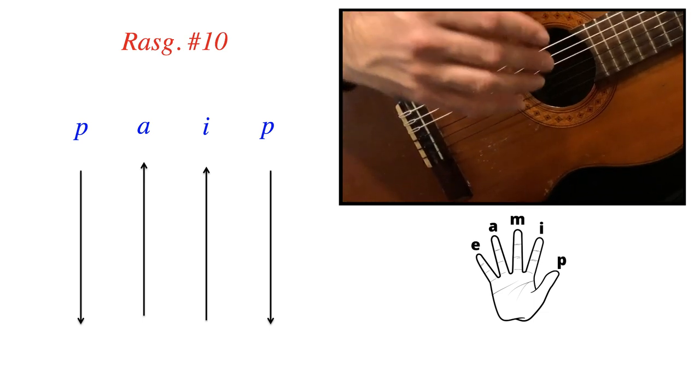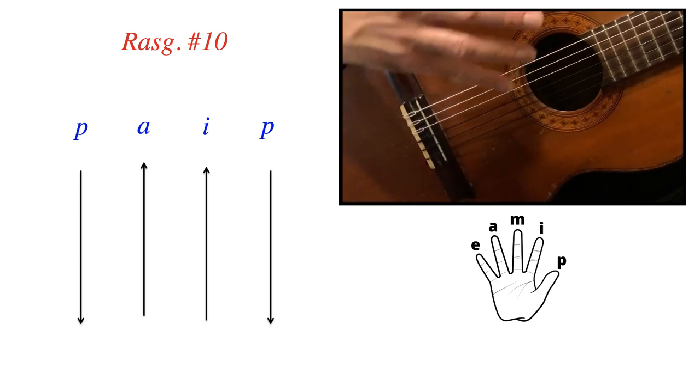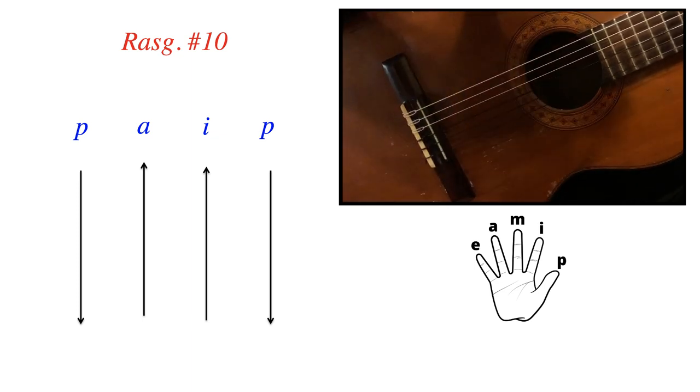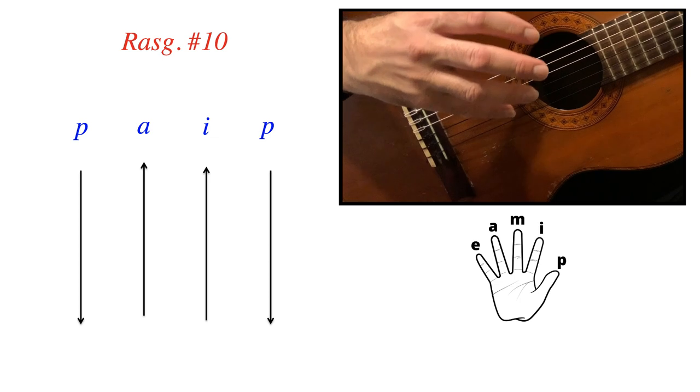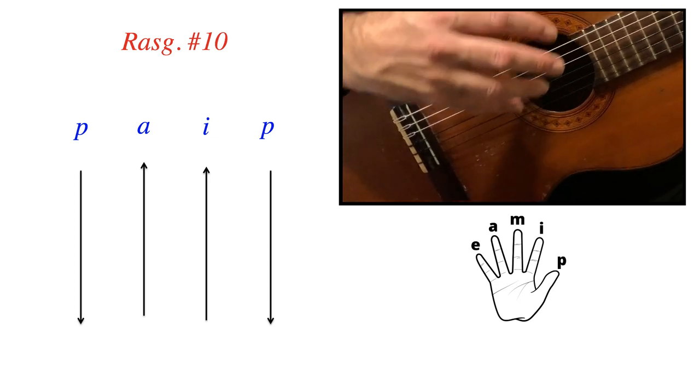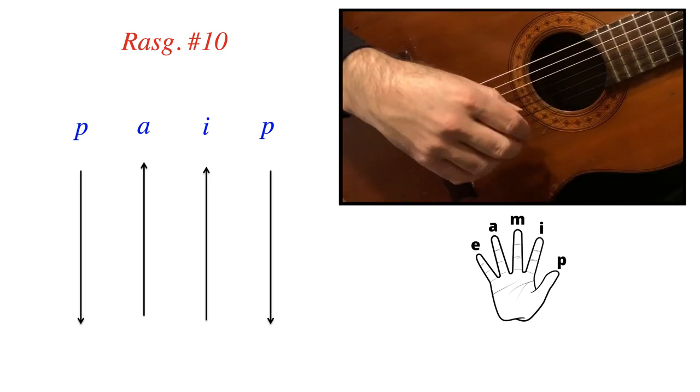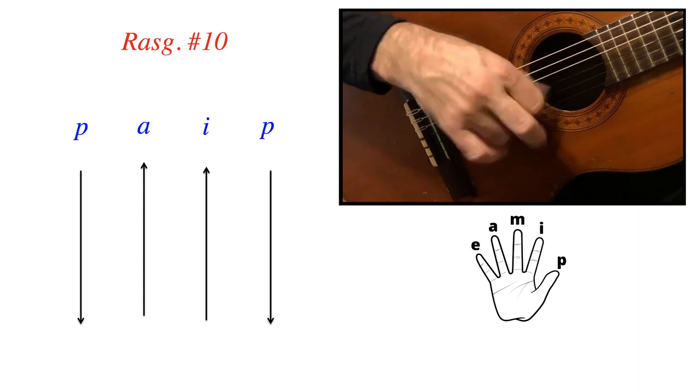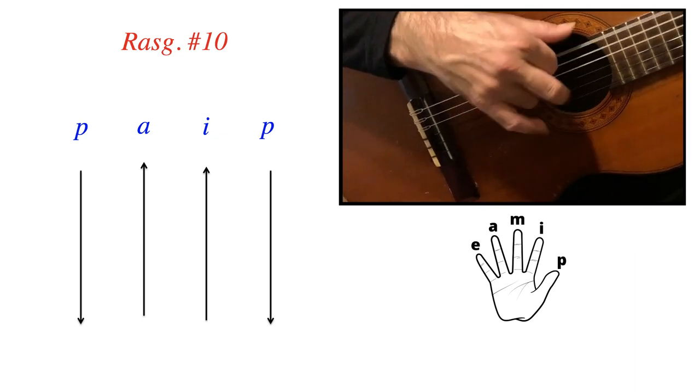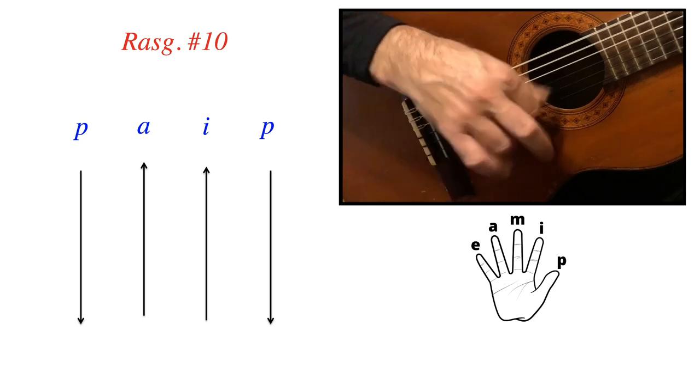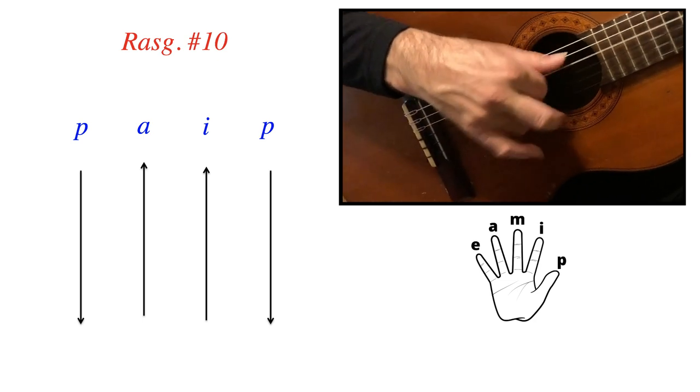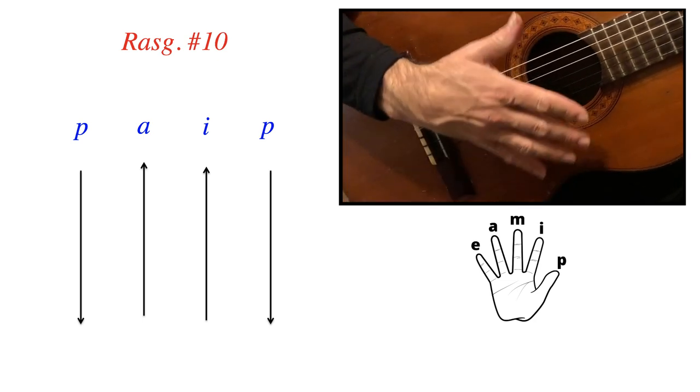And once again, you could use that in Verdiales. Why do I use that one so much? Because that's such a good gauge of the efficacy of your rasqueados. And of course, you could do it in cycles. Malagueñas.